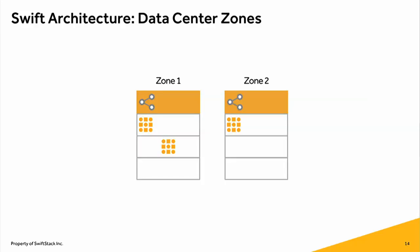How Swift does this: the first thing introduced was the concept of zones. A zone in Swift allows an operator to say, here's a section of my data center running under this power source, or with this cooling environment — it's a fault-tolerant domain. That was one of the first things Swift implemented to allow an operator to do that.